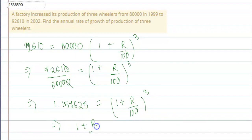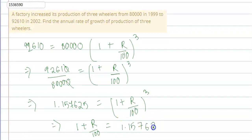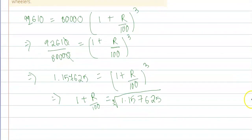So, 1 + r/100 would be equal to the cube root of 1.157625. Let's remove this value — this is a little complicated — then 1.157625 to the power 1/3.